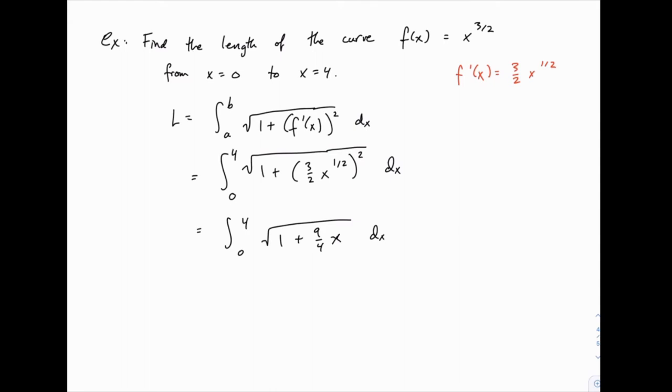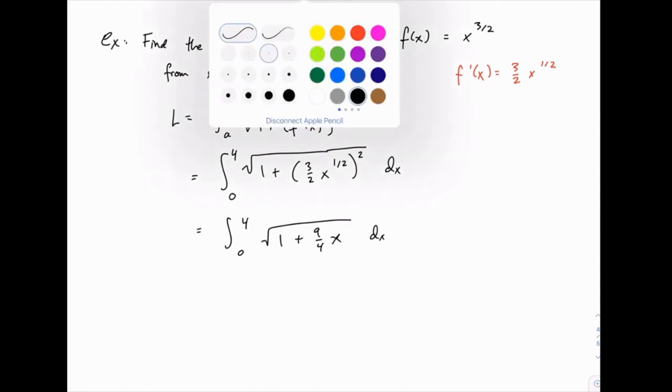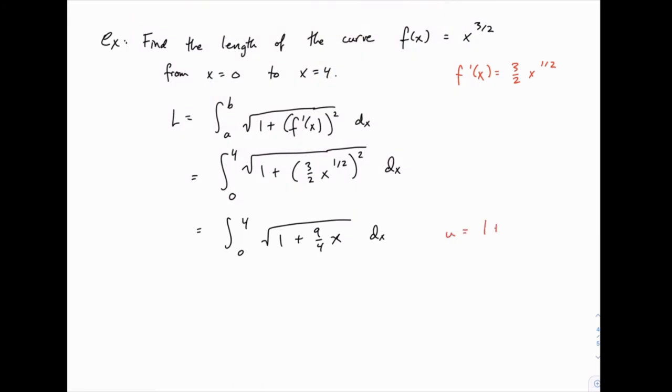To integrate this, we need to do a quick u substitution, where we let u equal 1 plus 9 fourths x. Then du equals 9 fourths dx, and in order to make our substitution, we need to solve for dx here. So if we divide both sides by 9 fourths or multiply by 4 ninths, we get 4 ninths du equals dx.